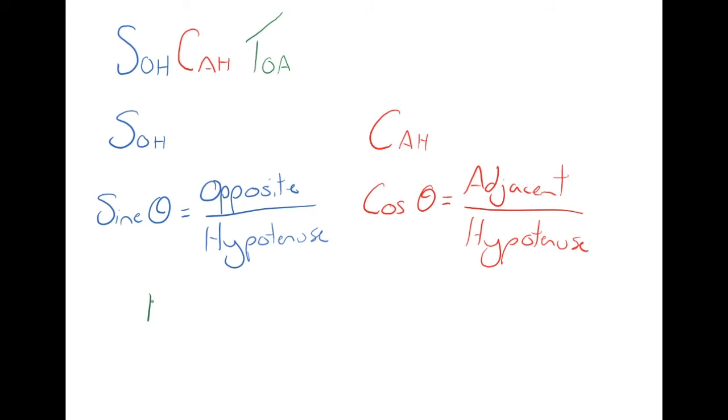And if you have Toa, that stands for tangent, or tan theta equals opposite over adjacent. If you have the opposite and adjacent sides in the triangle, you should be dealing with tan.